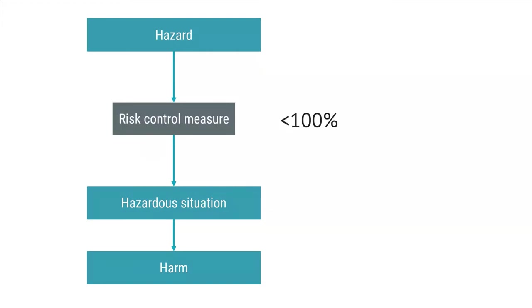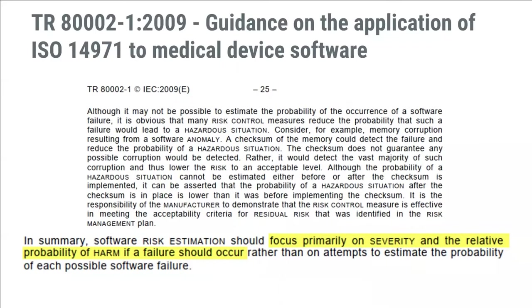It may be difficult to estimate how efficient a software risk control measure is, but doing something is better than doing nothing. This can be referred to as a relative probability rather than a quantitative probability. If you haven't heard this term before, I recommend the guidance on application of ISO 14971 to medical device software, where you can find: focus primarily on severity and the relative probability of harm if a failure should occur. Now let's get back to what we can do about P1.